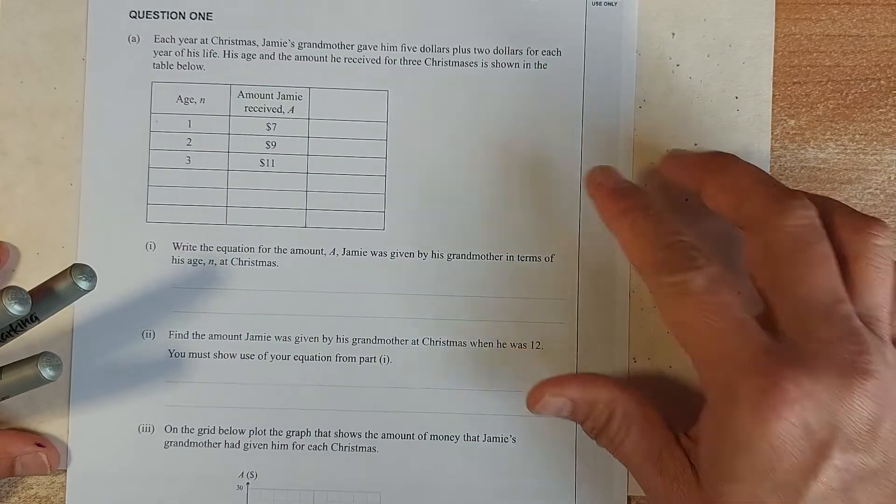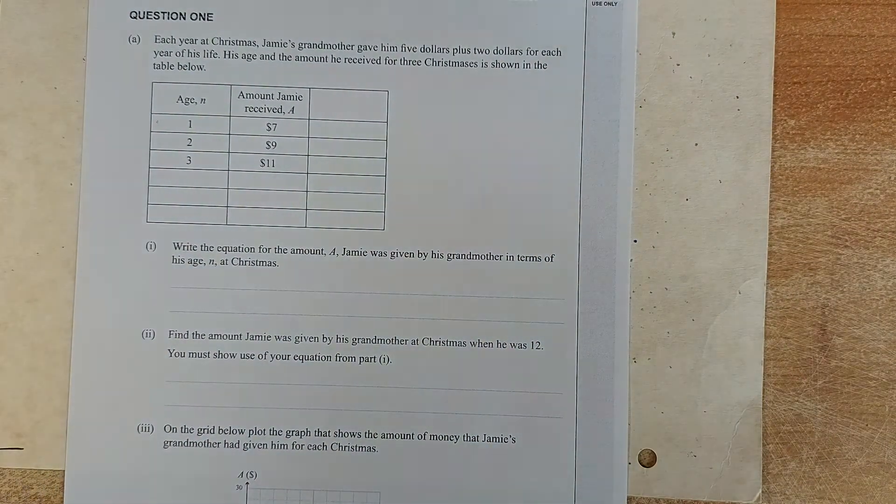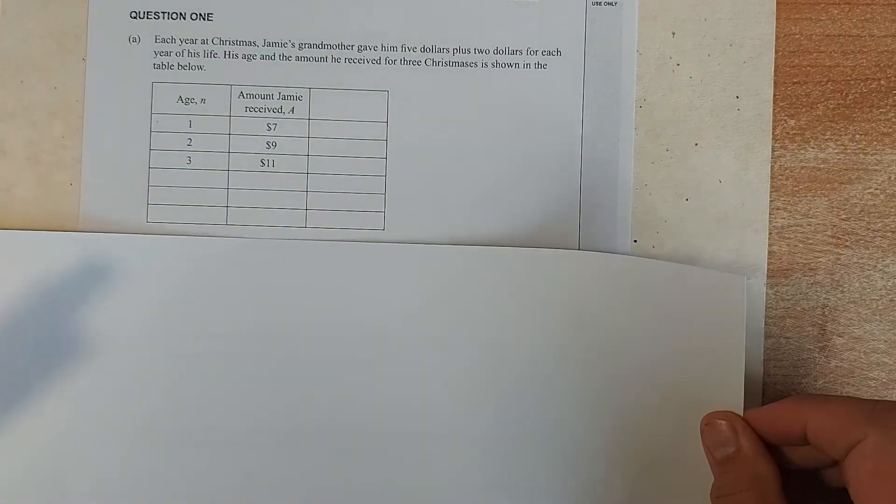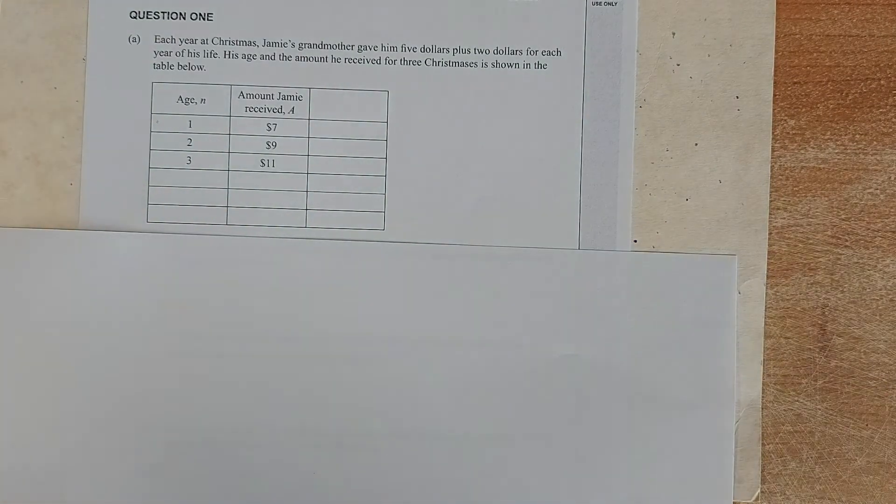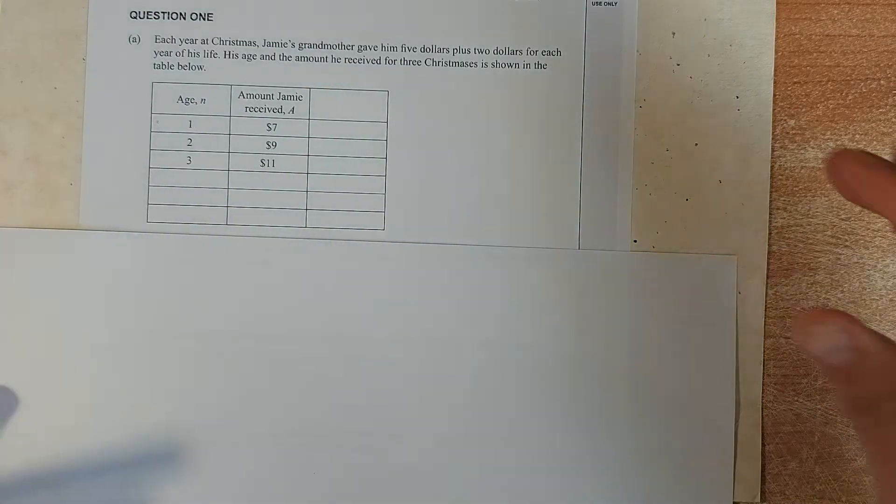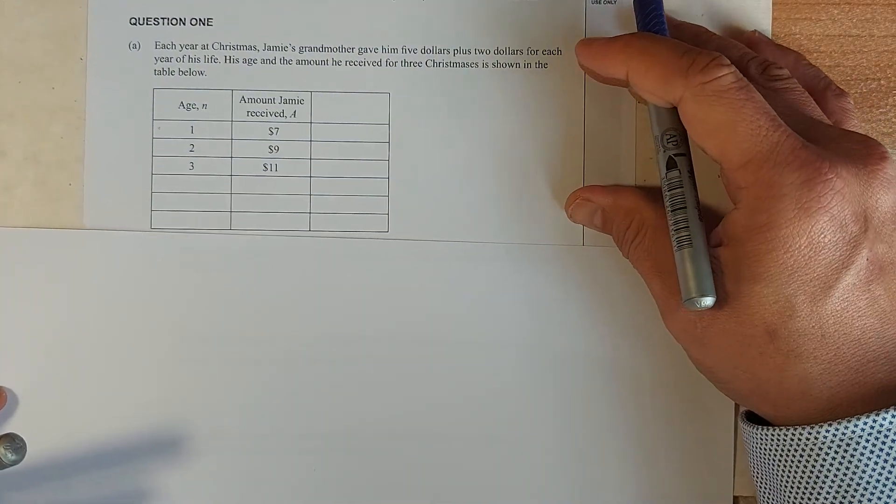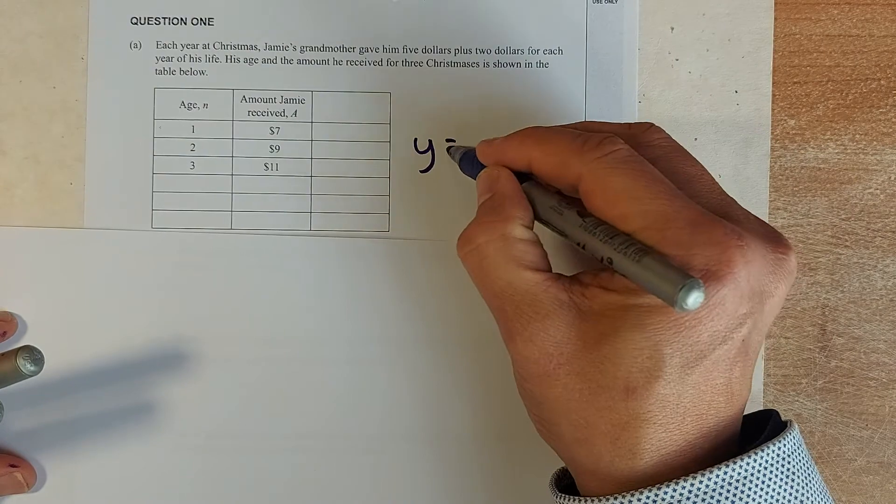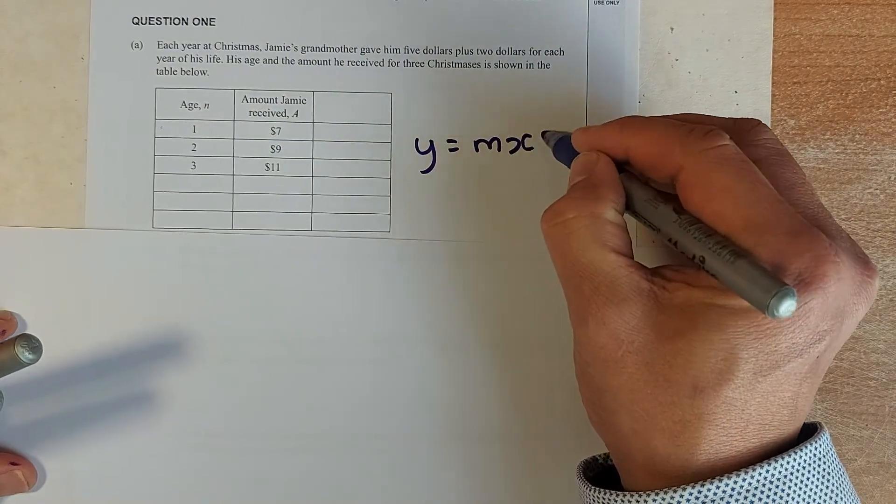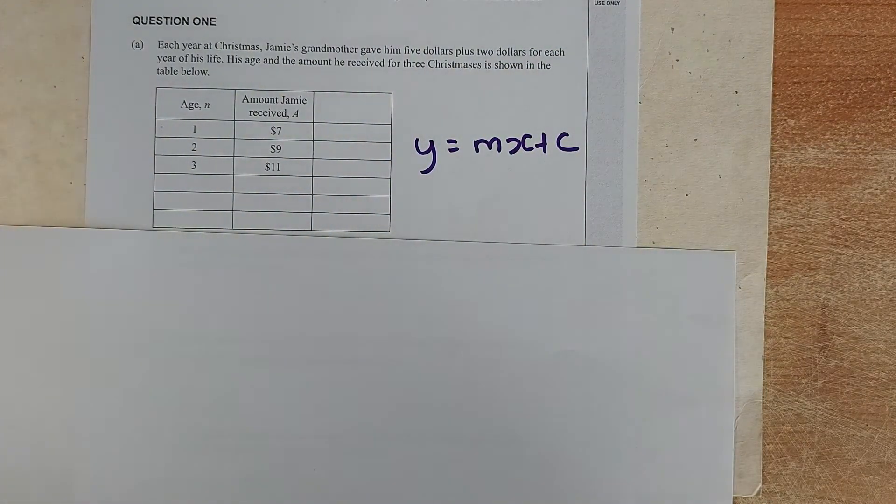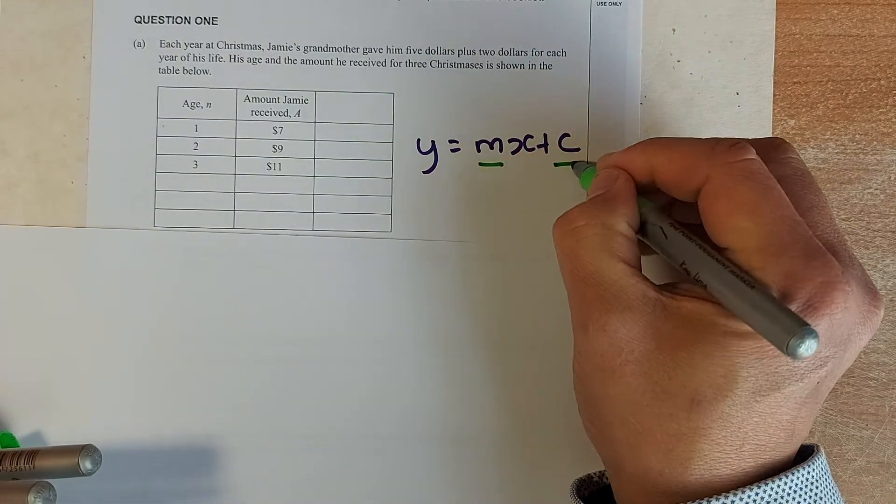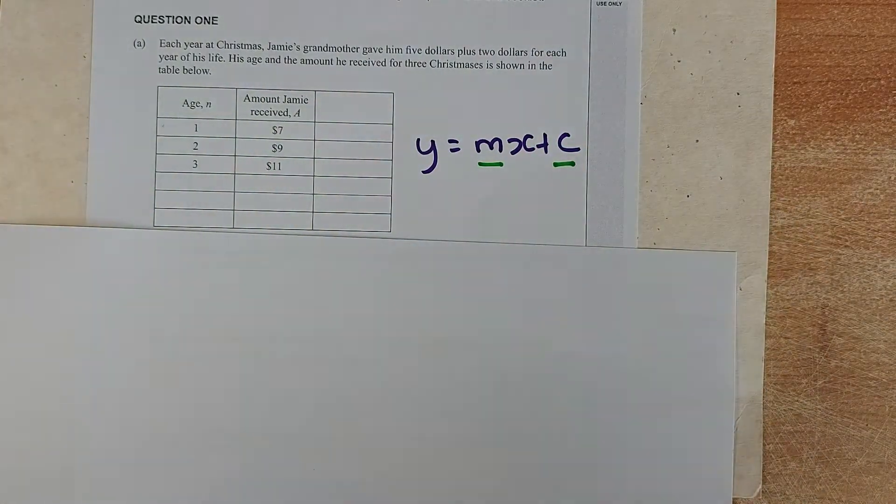We will continue now with getting the equation from a table. This is from the 2013 exam, and you are given a table there and you want to find the equation. So the first thing you need to know, the equation of a straight line graph is always the same: y equals to mx plus c. So again your job is to find m and c. This time it's easier to find m.